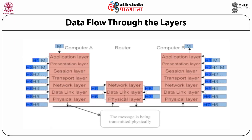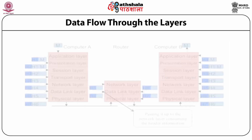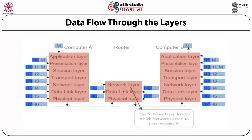The message is physically transmitted to the next network equipment. The router works with three layers — physical, data link, network — and routing is done there. The router receives the message, checks the header information, decides which device to pass it on to, and sends it. Finally, the message reaches computer B. This is how layers work for flowing data in the network.